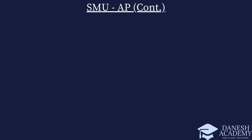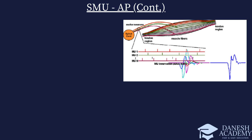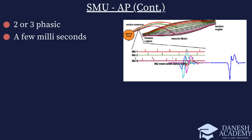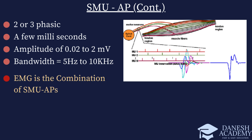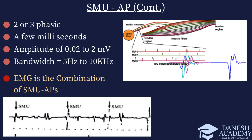SMU-APs are brief electrical signals generated by the activation of individual motor units within a muscle. They typically consist of two or three distinct phases, each lasting a few milliseconds. Relative to the size of the motor unit, SMU-APs have an amplitude range of 0.02 to 2 mV and a frequency bandwidth ranging from 5 Hz to 10 kHz. The electromyogram (EMG) is the collective recording of multiple SMU-APs from a muscle, providing insights into the electrical activity and function of the muscle.